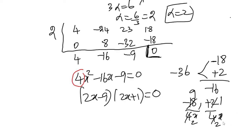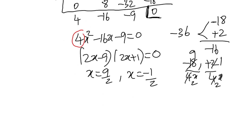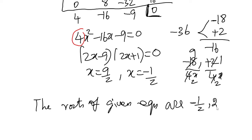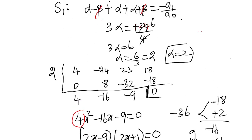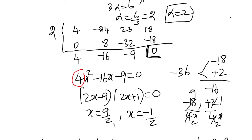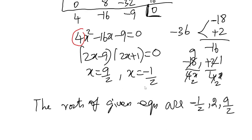Factoring gives (2x minus 9)(2x plus 1) = 0. So x equals 9 by 2 and x equals minus 1 by 2. Therefore the three roots of the given equation are: alpha minus beta = minus 1 by 2, alpha = 2, and alpha plus beta = 9 by 2. These are the roots.